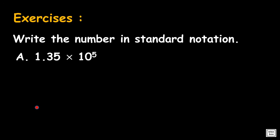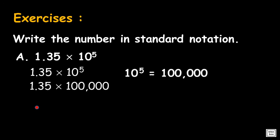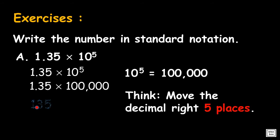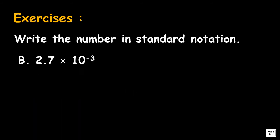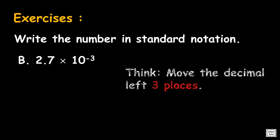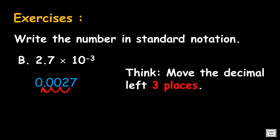Write 1.35 times 10 to the power 5 in standard decimal notation. Since the exponent is positive 5, move the decimal 5 places to the right. Answer is 135,000. Write 2.7 times 10 to the power minus 3 in standard decimal notation. Since the exponent is negative 3, move the decimal 3 places to the left. Answer is 0.0027.